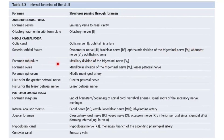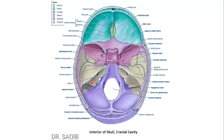Foramen rotundum passes the maxillary division of the trigeminal nerve. Foramen ovale passes the mandibular division of the trigeminal nerve and the lesser petrosal nerve. From foramen spinosum passes the middle meningeal artery. The hiatus for the greater petrosal nerve passes the greater petrosal nerve, and the hiatus for the lesser petrosal nerve passes the lesser petrosal nerve.